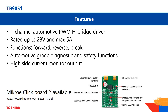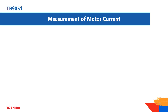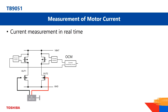This device is in mass production and an evaluation click board can be ordered via online distribution or directly from our partner Microelectronica. The TB9051 integrates a current monitor at the OCM output pin, which gives the user the possibility to watch the motor coil current in real time. In particular, 0.223% of the current which flows through the H-bridge to the motor is led to the OCM pin.